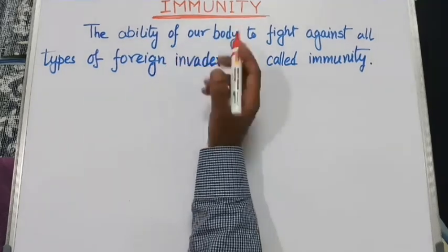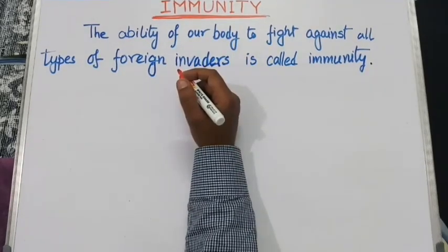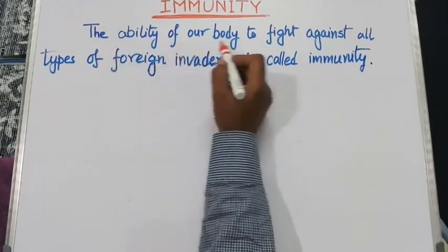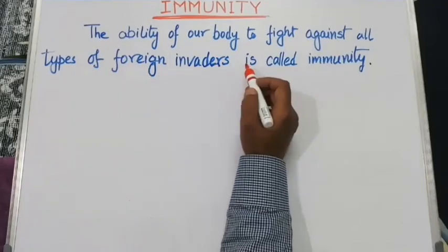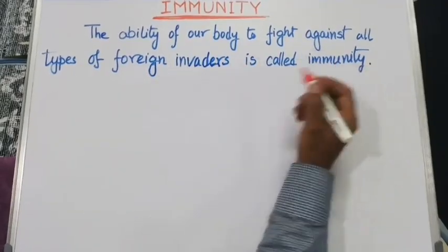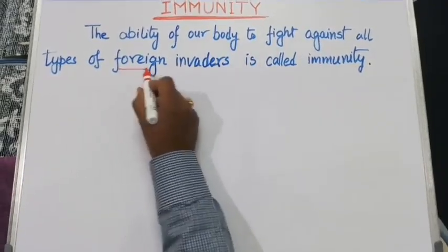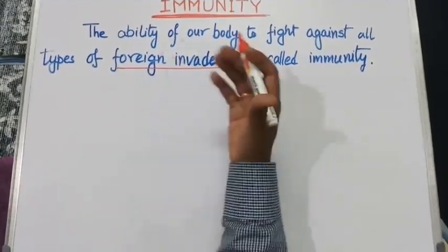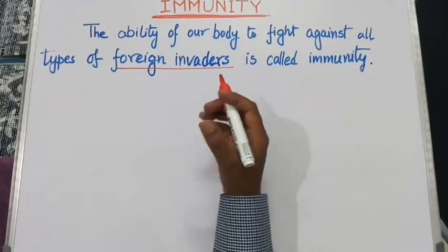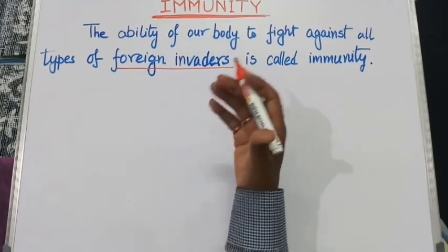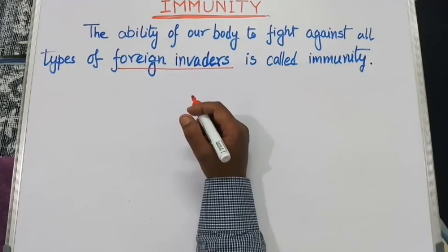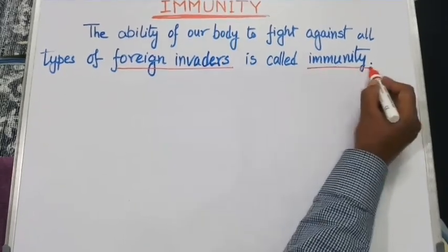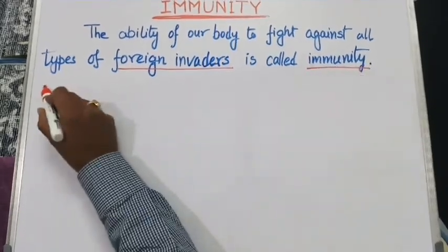Let's start with the definition of immunity. The ability of our body to fight against all types of foreign invaders is called immunity. Here the term foreign invaders means different types of pathogens, germs, antigens, or toxic substances produced by those pathogens or germs. The study of immunity is known as immunology.